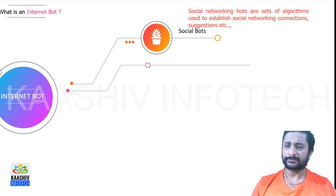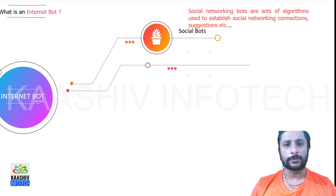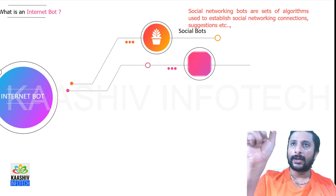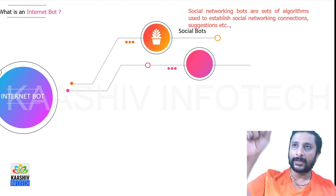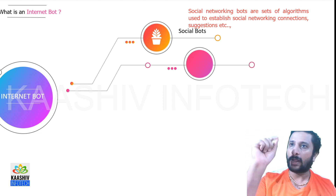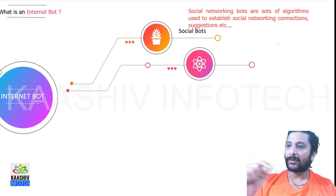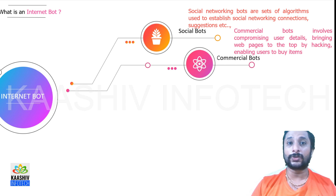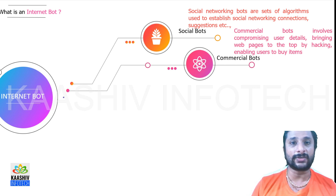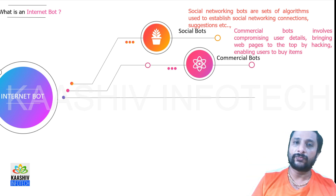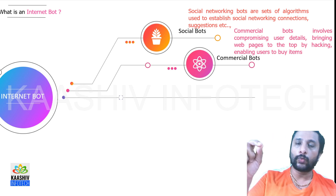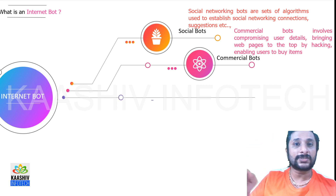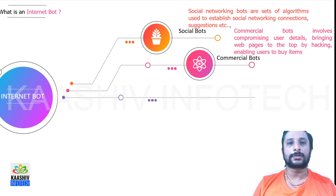One type is social bots. For example, on Facebook, when you add or approve a friend, you immediately get more friend suggestions. When you like one page, you get suggestions for more pages to like. That is called a social bot.